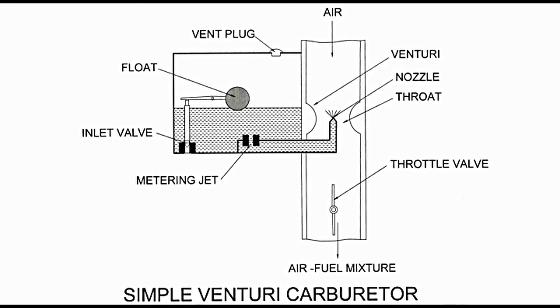On the lower side there is a throttle valve in the form of a plate that can move about its middle point. As can be seen in the diagram, the vertical position of the plate permits maximum passage to air fuel mixture.